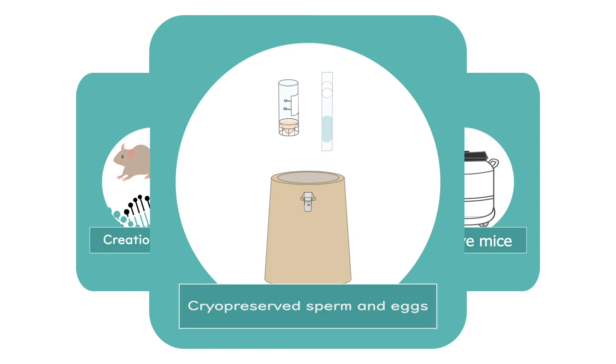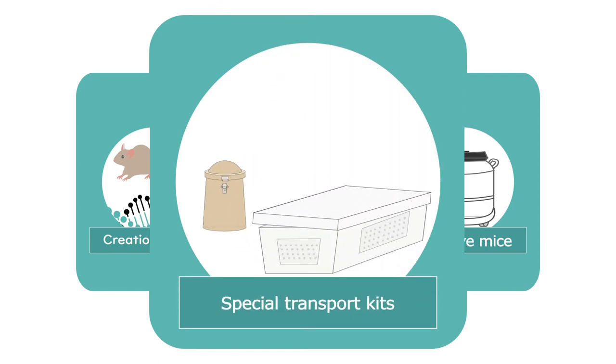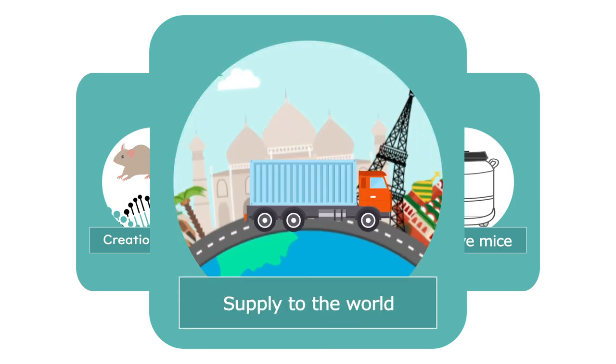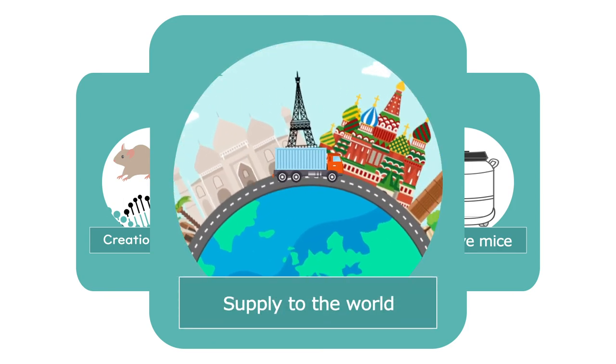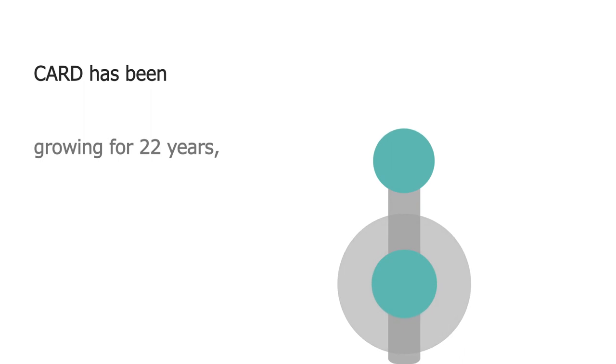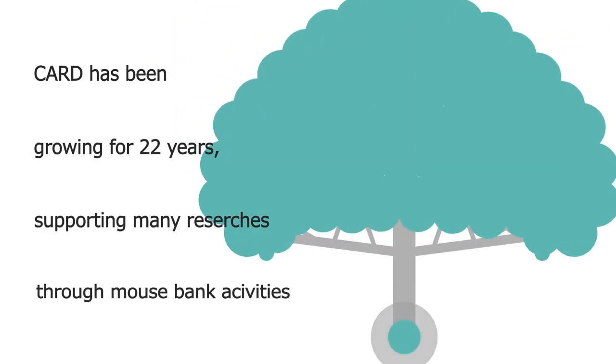We put the cryopreserved sperm and eggs in special containers for freezing and transporting, and supply the mice to the world using a special transport kit. For 22 years, CARD has been growing while supporting many researches through mouse bank activities.